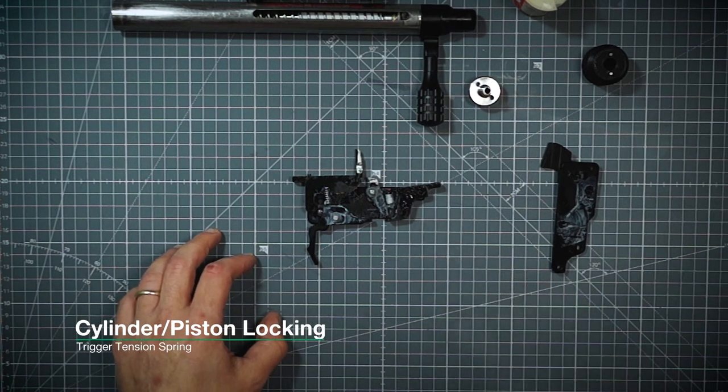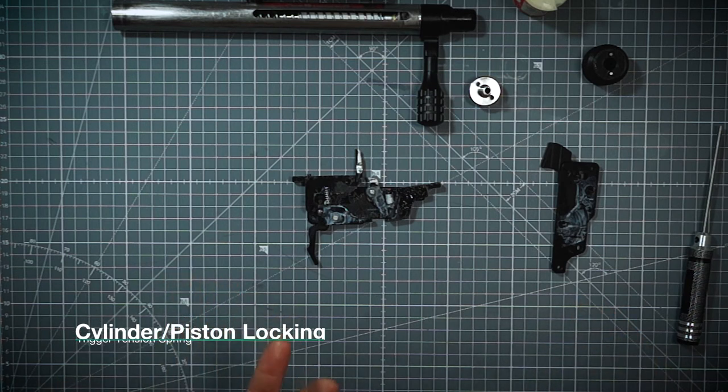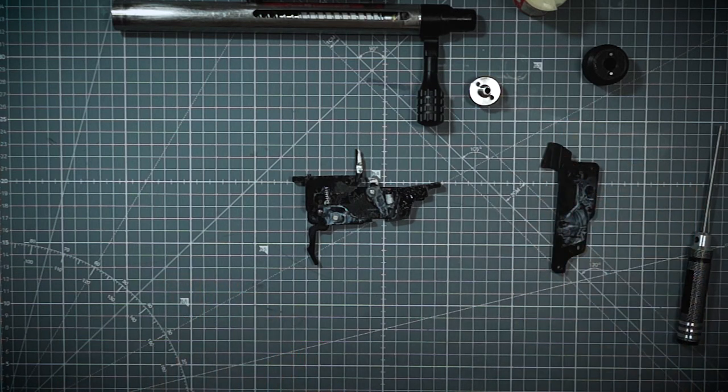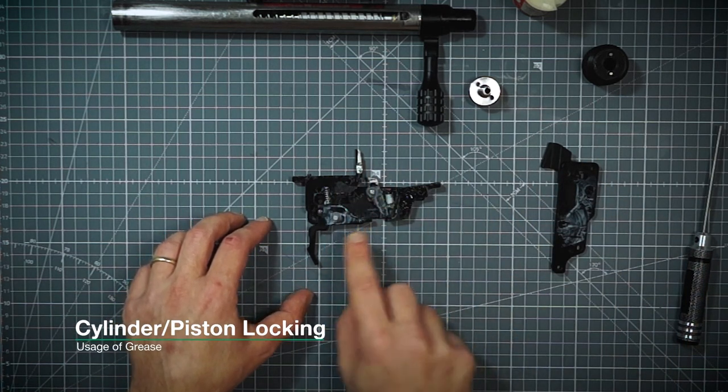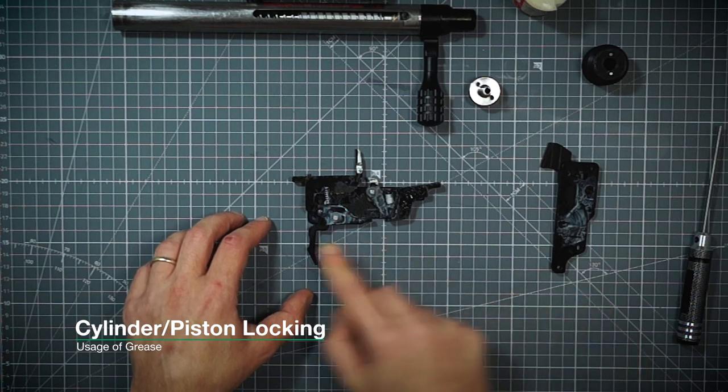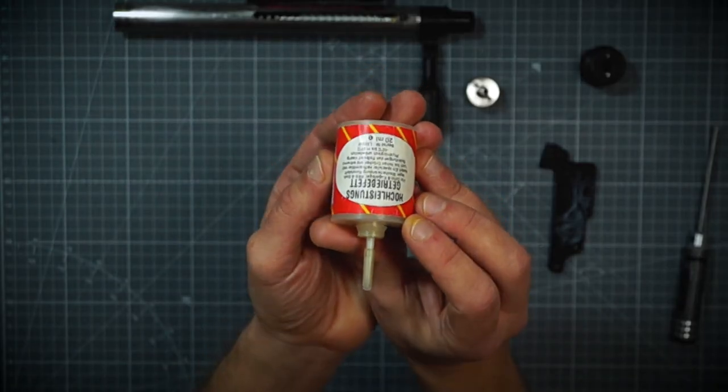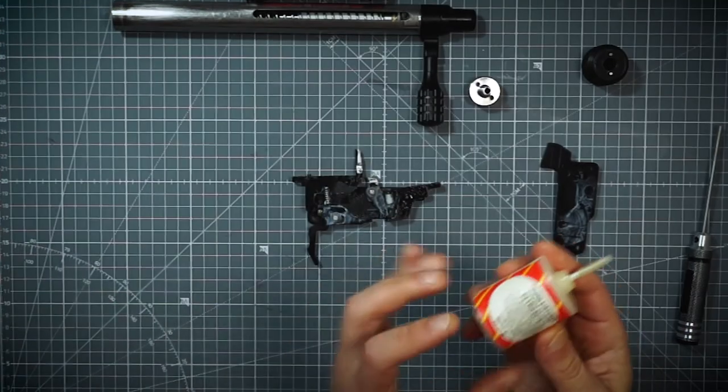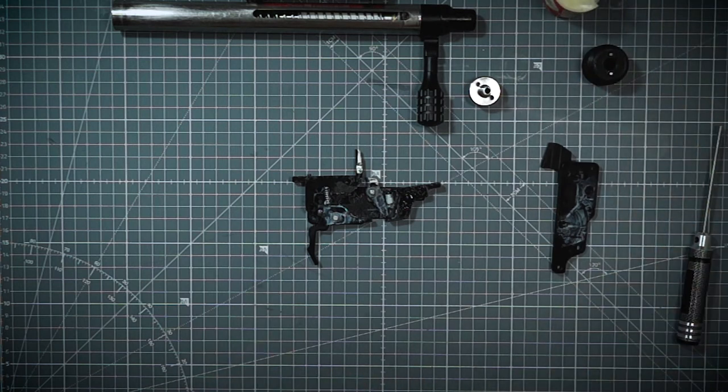The additional tip that I would like to give: as you can see in my trigger unit, you see very white grease inside the trigger unit. This is actually a grease that I'm using which is used for RC car engine parts. This is an engine grease—it's not like a silicone grease.